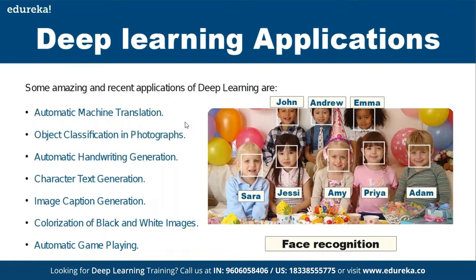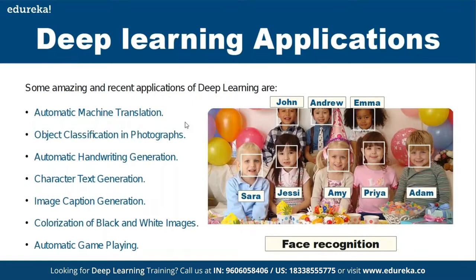Deep learning applications: using deep learning you can do automatic machine translation, object identification in a photograph — different persons identified by name once your model is trained — this is object classification. It can also identify automatic handwriting generation, meaning if you write a character or digit it should be able to identify whether it's a number or character — that is text generation.